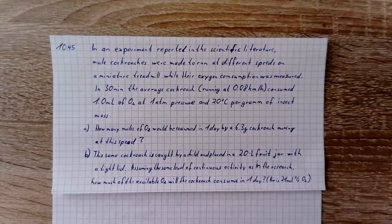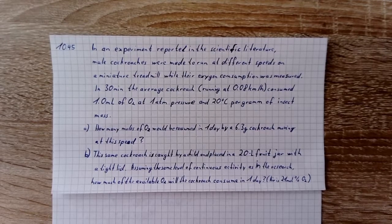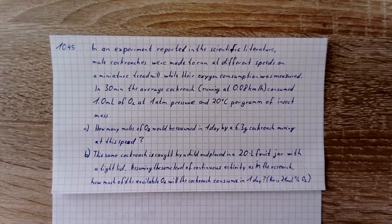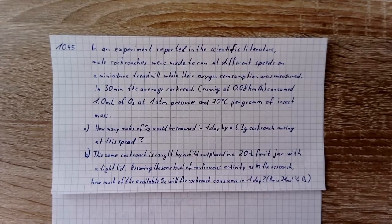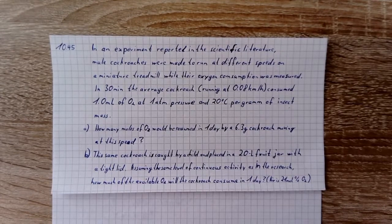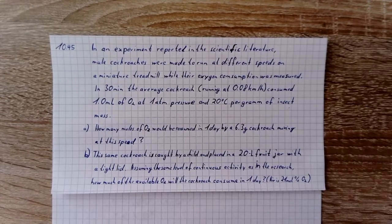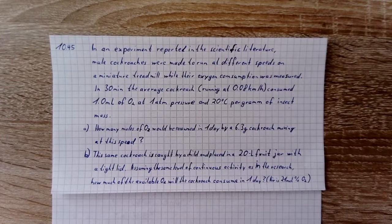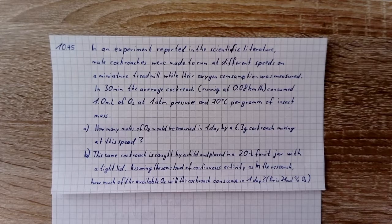Hello and welcome to this little tutorial to exercise 10.45. In an experiment reported in the scientific literature, male cockroaches were made to run at different speeds on a miniature treadmill while their oxygen consumption was measured.